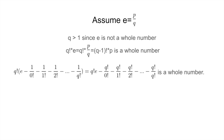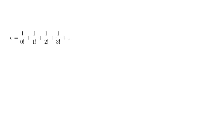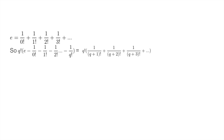But by using the equation e equals 1 over 0 factorial plus 1 over 1 factorial plus 1 over 2 factorial plus 1 over 3 factorial etc., we see that q factorial times e minus 1 over 0 factorial minus 1 over 1 factorial, all the way up to minus 1 over q factorial, is actually equal to q factorial times 1 divided by (q+1) factorial plus 1 divided by (q+2) factorial, and so on forever.